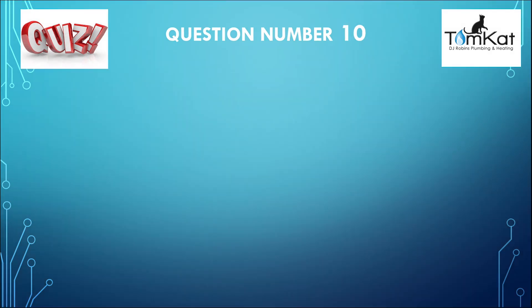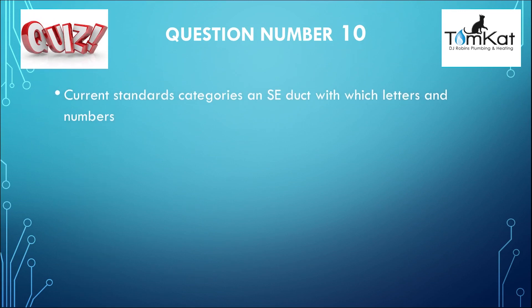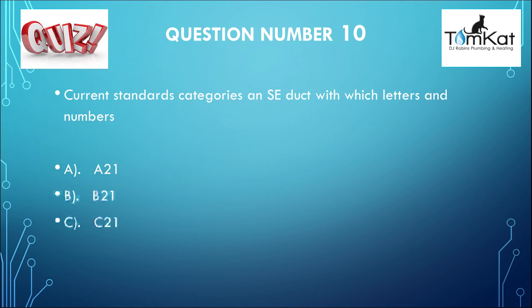Question number ten: Current standards categorise an SE duct with which letters or numbers. Is it A, A21? Is it B, B21? Or finally, is it C, C21? That is the end of question number ten and the end of this quiz.